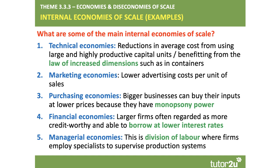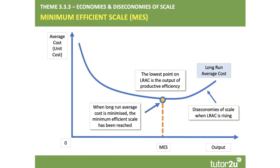Think about businesses like Coca-Cola, Pepsi and Tesco — multi-million pound advertising budgets, but they sell millions of units every day. Big businesses can also achieve purchasing economies of scale, buying inputs at lower prices because of their buying power in the market — we call that monopsony power. Larger firms are often regarded as more credit-worthy and can borrow money at a lower rate of interest — that's a financial economy of scale. Managerial economies involve bigger businesses dividing the labour force up, employing specialists, managers and purchasers to supervise production systems.